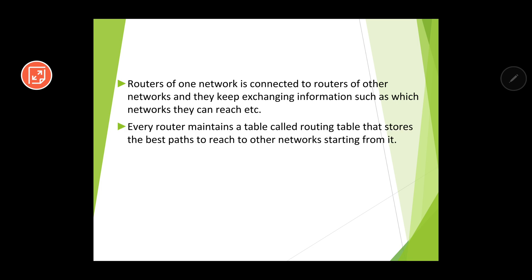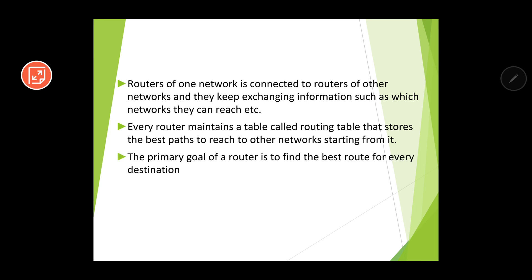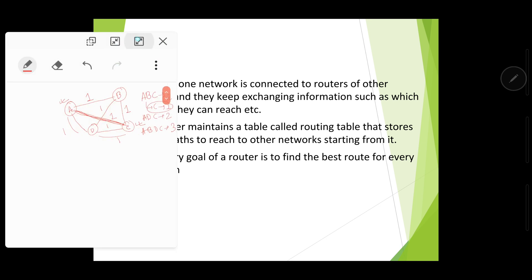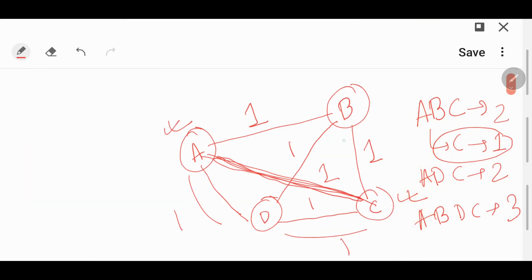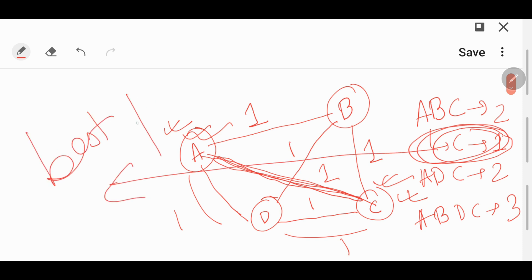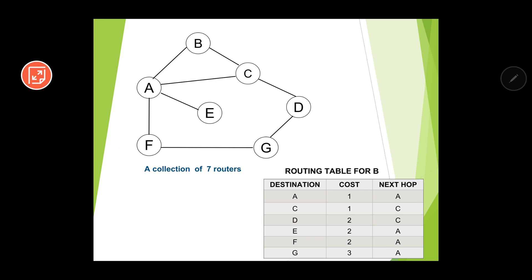Every router maintains a routing table that stores the best path to reach other networks from its position. The primary goal of a router is to find the best route for every destination. For example, if the aim is to reach from A to C, the router selects the direct path A → C because it is the best path.